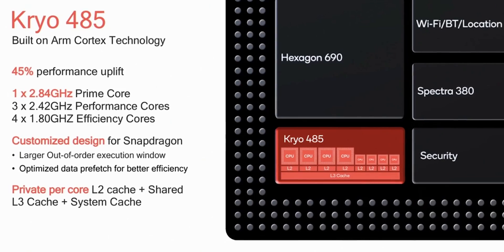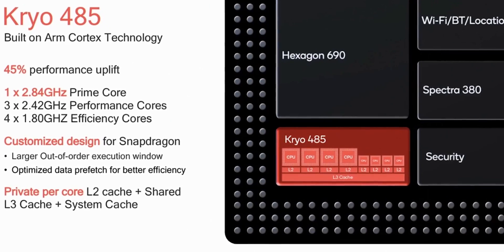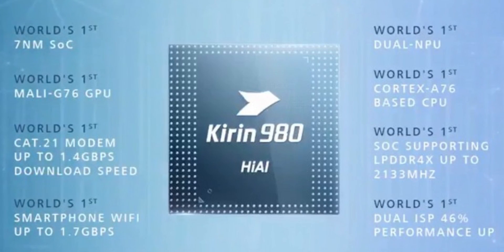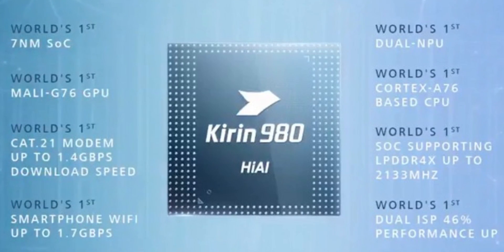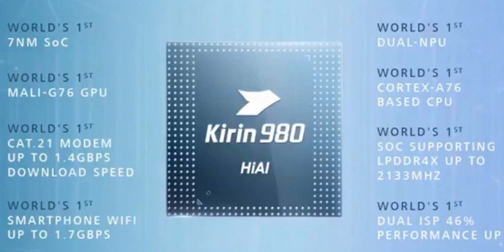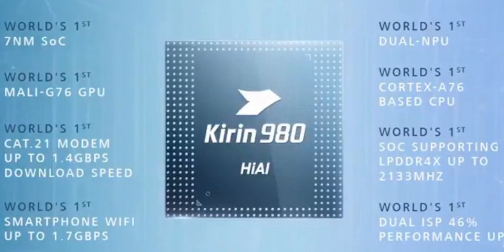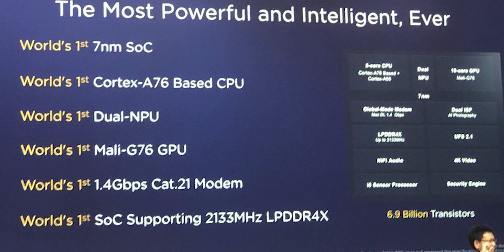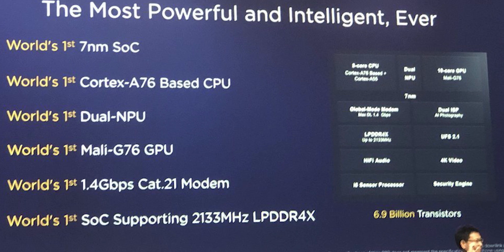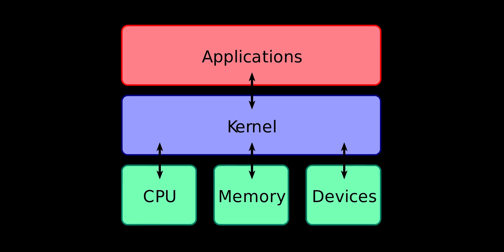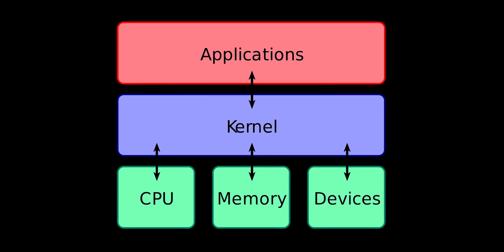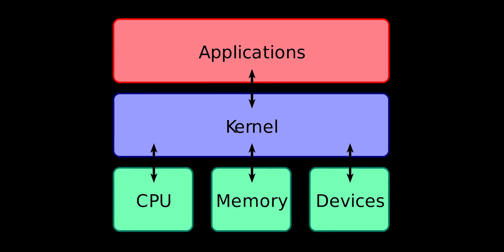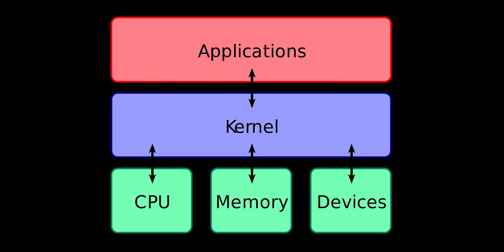Now, Qualcomm is a good chip manufacturer, and Huawei also has a 7nm chipset. But why does Android still lag? Let's talk about the OS. When you have an operating system, there are hardware-level calls, there are kernels, and there are higher-level applications.